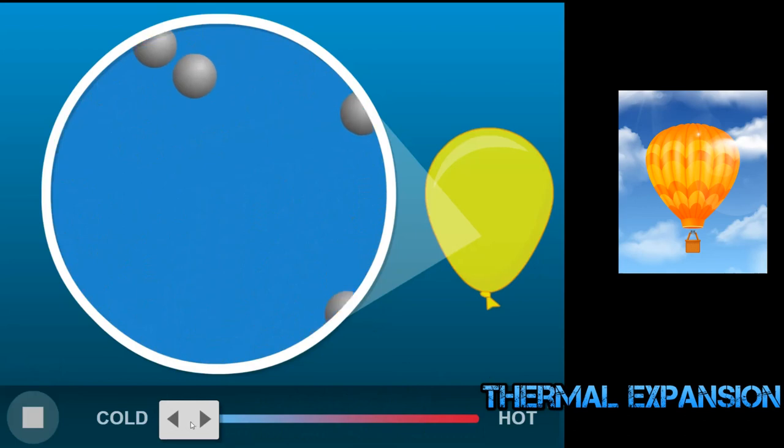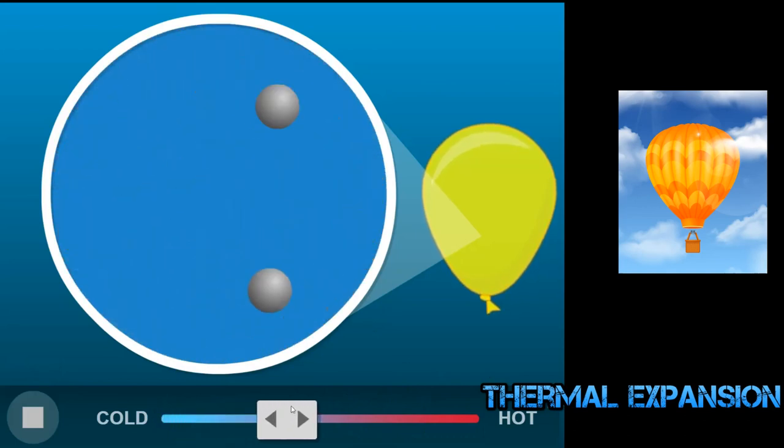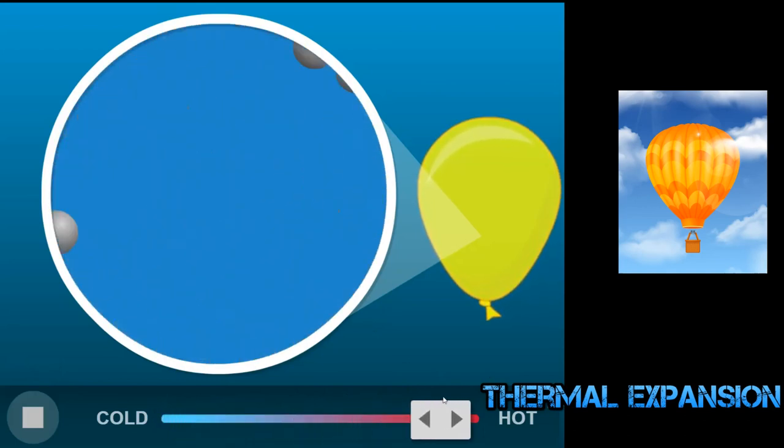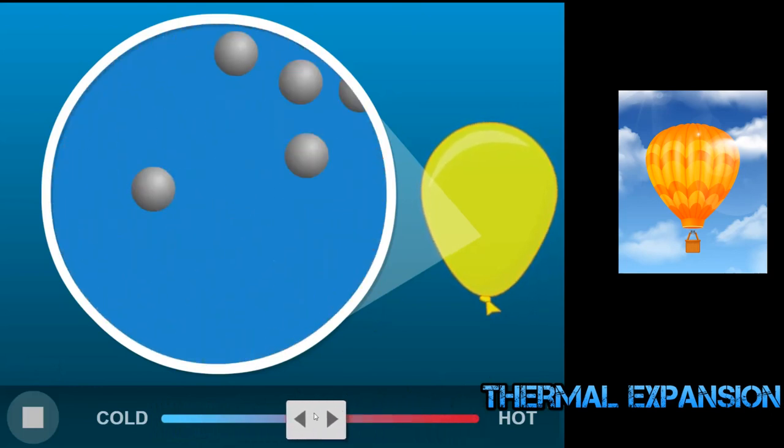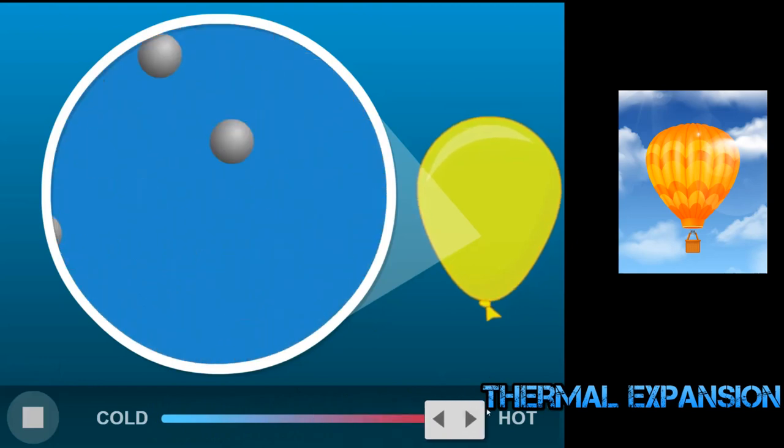And in gas, maximum expansion occurs. There is random movement. They gain high speed with temperature, striking on the walls of the container. And if I make it cold, they slightly come back to each other.